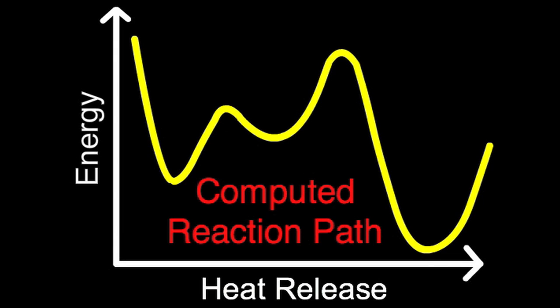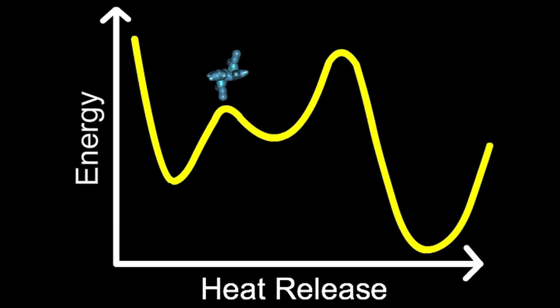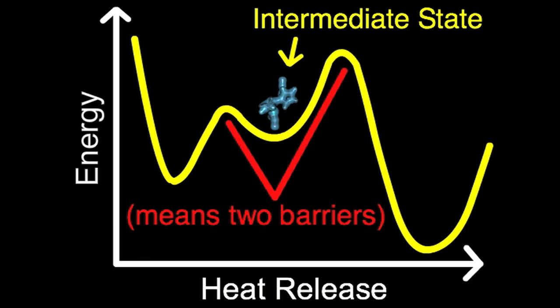As the molecule proceeds along the reaction pathway from the higher energy state back to the original state, it was thought to have only a single barrier. But the calculations revealed the presence of this intermediate state, which means it has two barriers along the pathway instead of one.